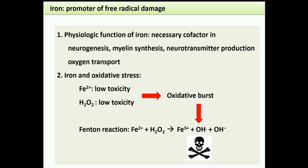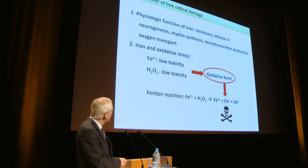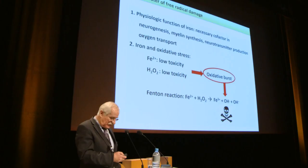Iron in the CNS is another amplification factor for oxidative injury. Oxygen radicals alone have low toxicity, and iron alone has low toxicity, but together they produce hydroxyl radicals — extremely toxic. Iron accumulates in the human brain with aging in a linear correlation. Importantly, iron is predominantly stored in oligodendrocytes and myelin rather than neurons or astrocytes.